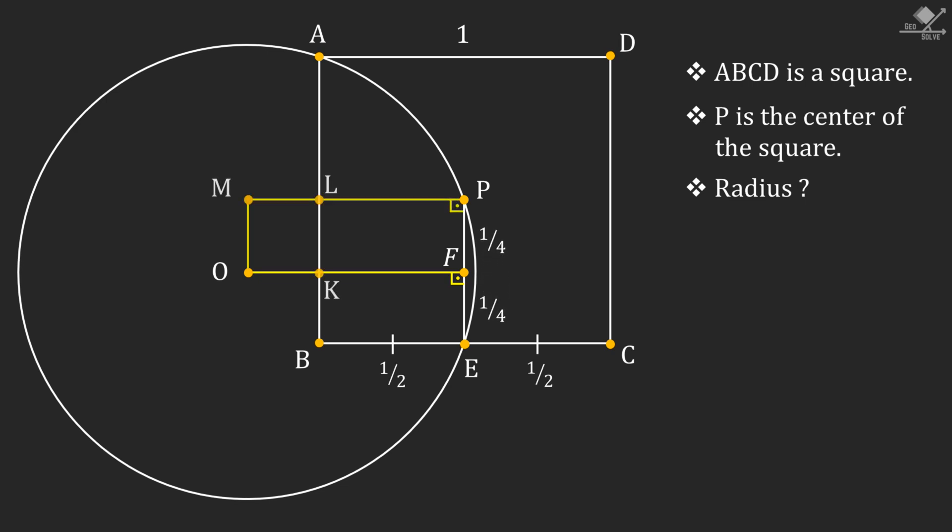Next, let's create this rectangle. Now we can transfer these lengths across the rectangle as follows. Also, since point P is the center of the square, line segment AL will be half of one side of the square.